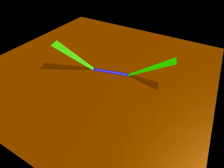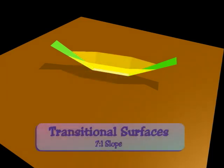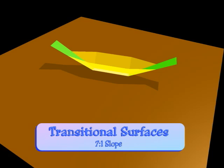The third surface is the transitional surface. The transitional surface extends outward and upward from the sides of an airport and its runway or runways. The transitional surface starts at the edge of the primary surface, and always rises at a standard slope of 7 to 1.